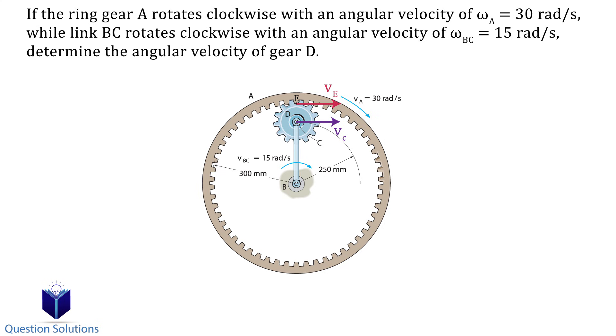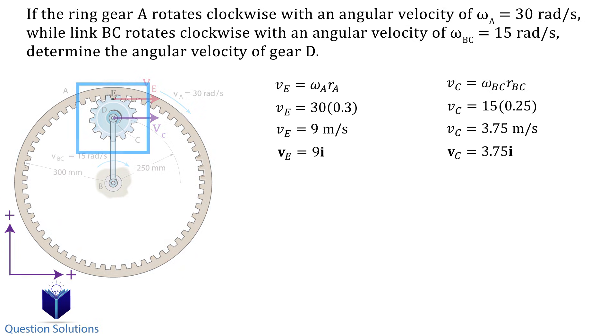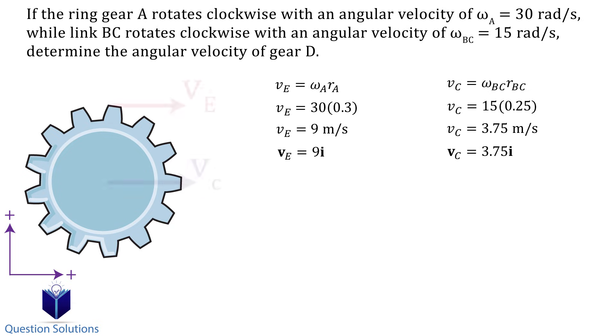Let's start with point E first. To figure out the velocity, we can multiply the angular velocity by the distance from points B to E. Remember to use meters. For the velocity of point C, we need to multiply the angular velocity of linked BC by the distance from point B to C. We can write the values we found in vector form by establishing x and y coordinates. Let's draw a quick free body diagram of gear D. We see that both velocities are in the positive x direction, so they only have i components.